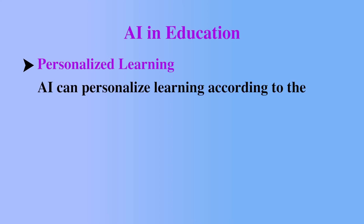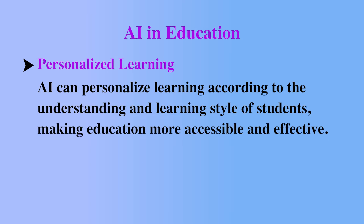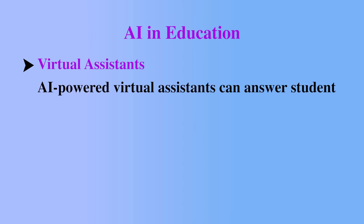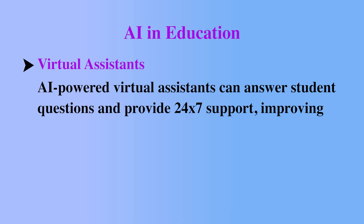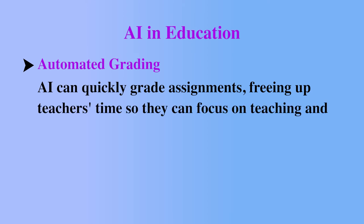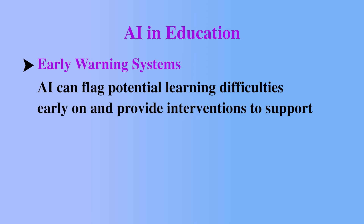Let us discuss the role of AI in these fields in detail. First: AI in education. Personalized learning — AI can personalize learning according to the understanding and learning style of students, making education more accessible and effective. Virtual assistants — AI-powered virtual assistants can answer student questions and provide 24/7 support, improving student engagement and outcomes. Automated grading — AI can quickly grade assignments, freeing up teachers' time to focus on teaching and student interaction. Early warning systems — AI can flag potential learning difficulties early on and provide interventions to support struggling students.